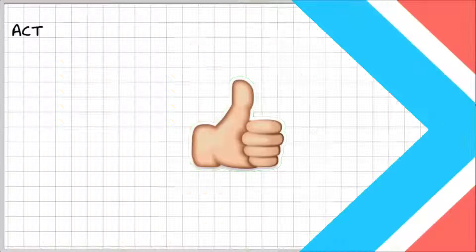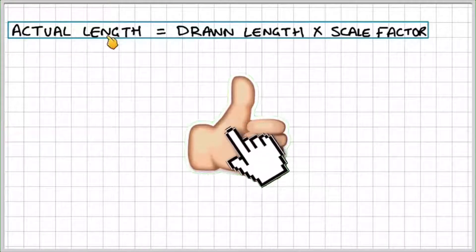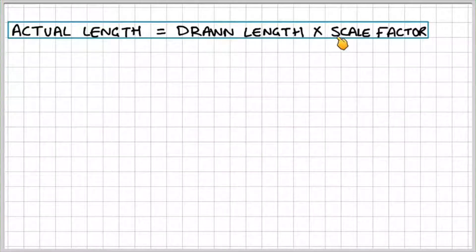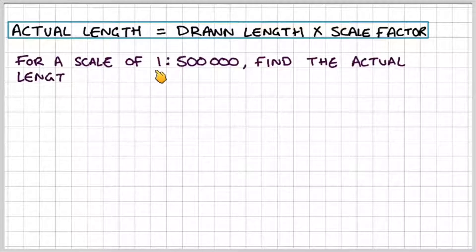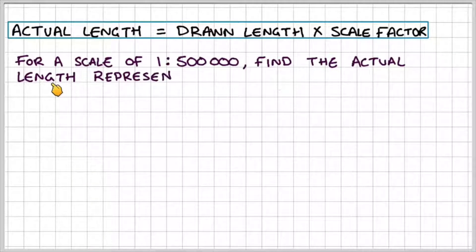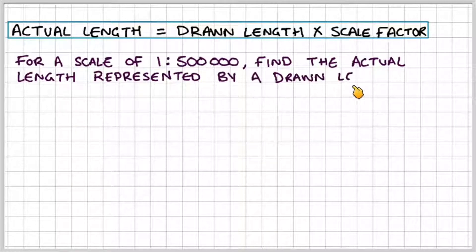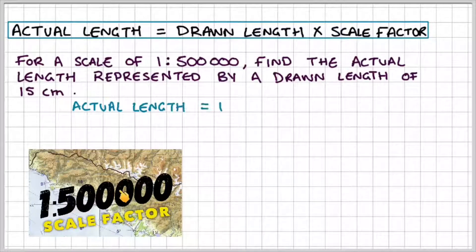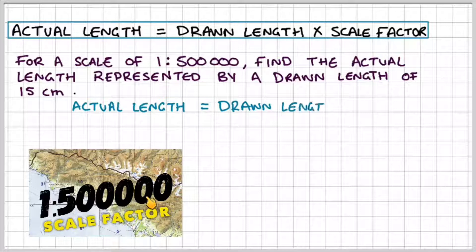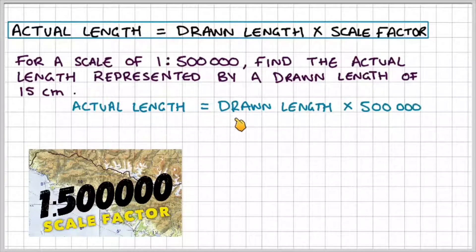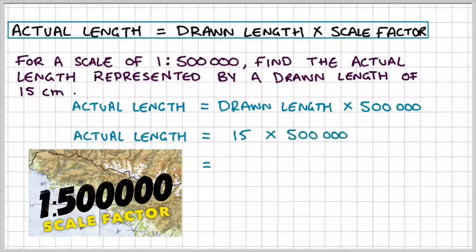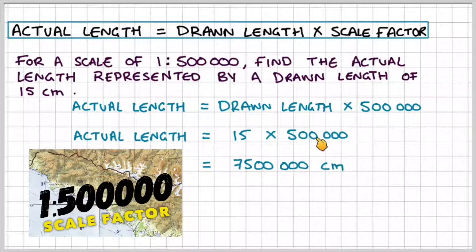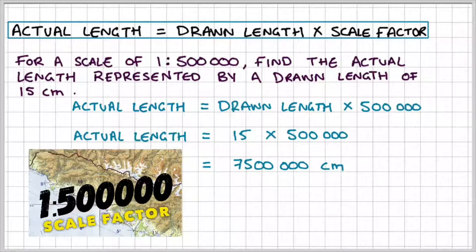Let's look at another example where we switch around the formula. So we have actual length is equal to the drawn length times the scale factor. For a scale of 1 to 500,000 find the actual length represented by a drawn length of 15 centimeters. Okay so if you had a map and it had a scale of 1 to 500,000 then the actual length would equal the drawn length times 500,000. If it was 15 and we times it by the scale factor of 500,000 we would get 7.5 million centimeters.